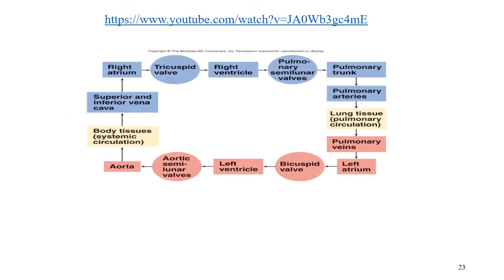Before we leave part 1, this flow diagram shows all structures in blue as oxygen poor or deoxygenated, and all structures in red as oxygen rich. In the middle are the lungs and body tissues, which are neutral. There are animations on Blackboard and the animation worksheet that will help you understand this concept — I highly recommend you view them. It doesn't matter how you learn these steps, as long as you know them in order.